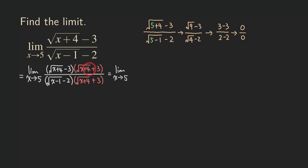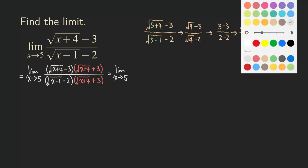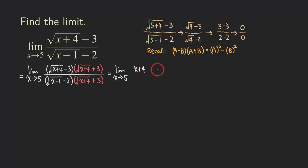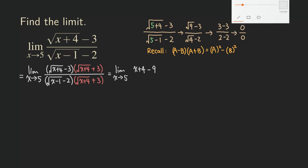Now we are going to multiply the numerator together and expand this. This is an expression multiplying by its conjugate — that's the difference of two squares. The formula is: when you have (a minus b) times (a plus b), you get a squared minus b squared. So it's the first term squared minus the second term squared. If you square the first term we get x plus four, and then square the second term, that's nine. Don't forget to subtract them — that's called a difference — so we put minus nine right here.